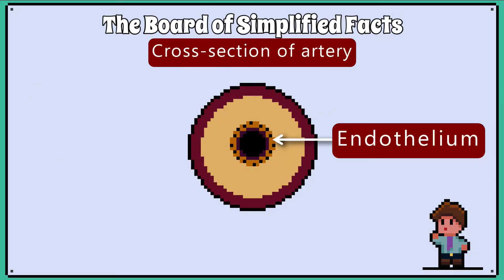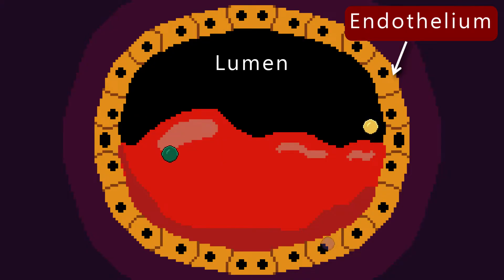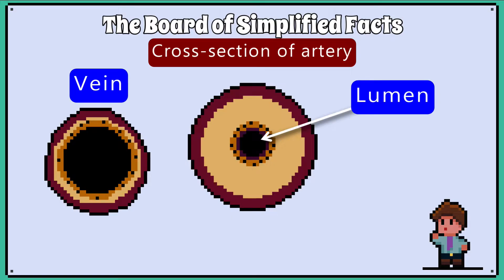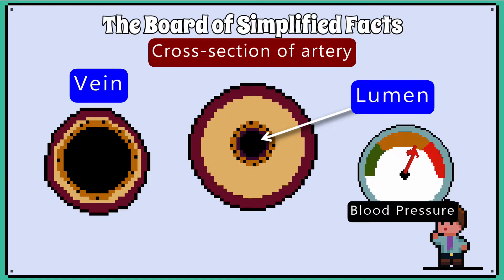The inner wall of the artery is called the endothelium and helps to keep blood flowing. It can release substances into the blood to regulate how fluid the blood is, and much more. The actual passageway through the artery is called the lumen. In arteries the lumen is relatively smaller compared to what we see in veins, and the reason why the lumen is small in the artery is so it can maintain the pressure.